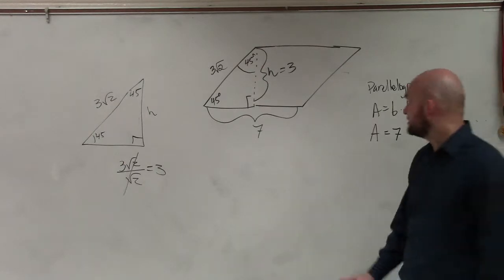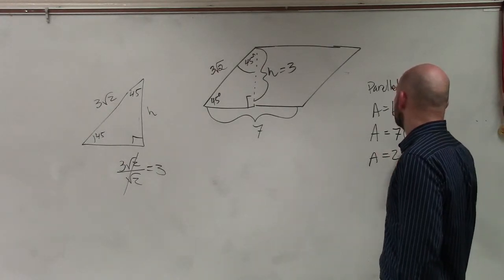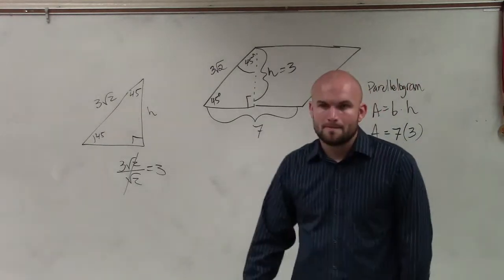How'd you do that? All right? So now it's just 7 times 3. A equals 21. Explain that again.